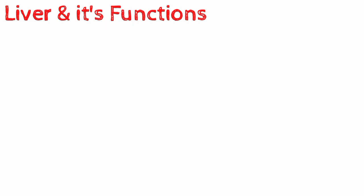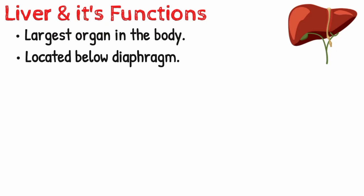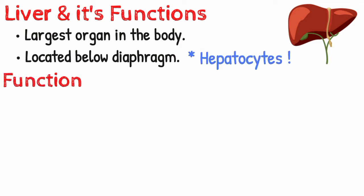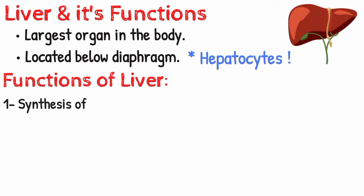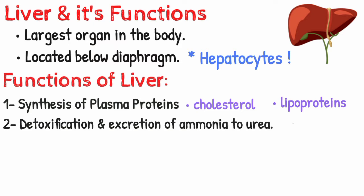Before we start our discussion on liver function test, let's review the liver and its functions in the body. The liver is the largest organ in the body. It is located below the diaphragm in the right upper quadrant of the abdominal cavity. The working cells of the liver are known as hepatocytes. Major metabolic functions include: first, synthesis of plasma proteins like albumin and globulins, cholesterol, triglycerides, and lipoproteins; second, detoxification and excretion — converting ammonia to urea via the urea cycle — as well as bilirubin and cholesterol.